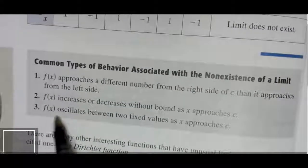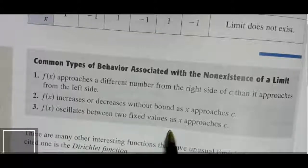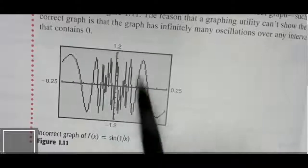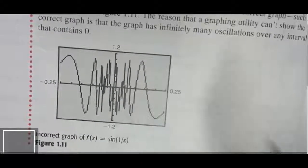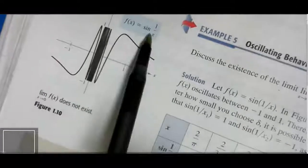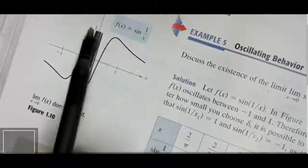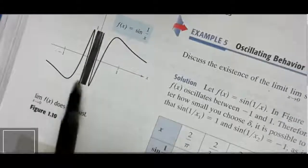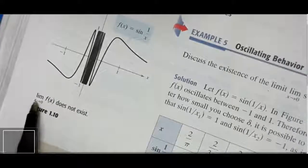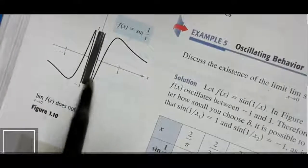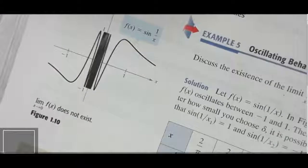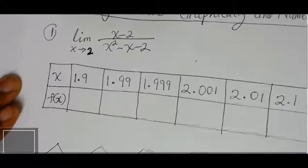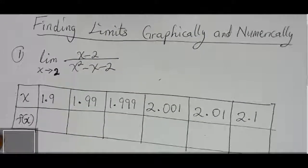The second case: f(x) increases or decreases without bound as x approaches c. If the function keeps going to infinity with no end, the limit does not exist. For example, as x approaches 0 from the left the graph goes up without end, and from the right it also goes up without end. We can't tell what y value the function is approaching since it just keeps going without bound, so the limit does not exist as x approaches 0.